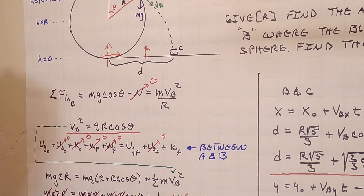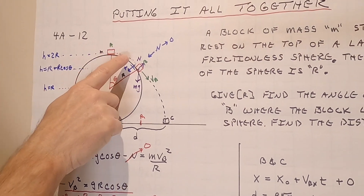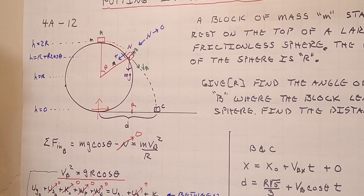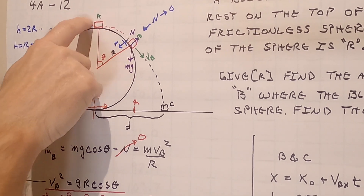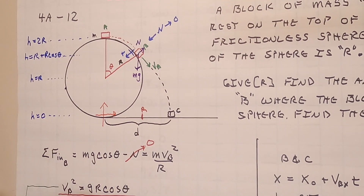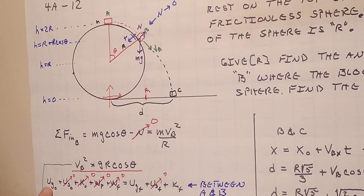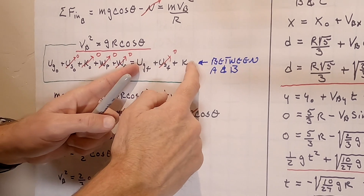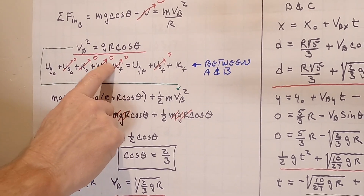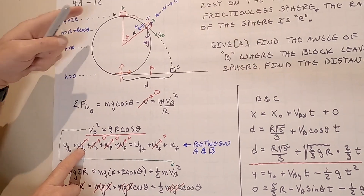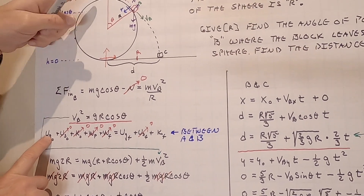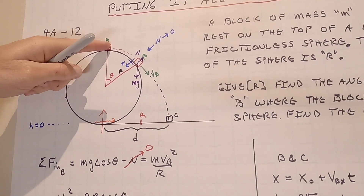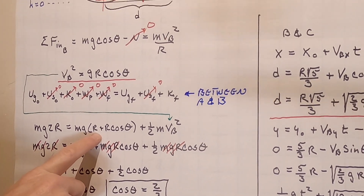Now we look at energy between the top and the departure point. We know how much energy there is at the top — the height is 2r, so we know the potential energy, and the kinetic is zero since we started from rest. Using the energy equation: initial energy plus work due to hand and friction equals final energy. There's no friction and no hand force, so those terms are both zero.